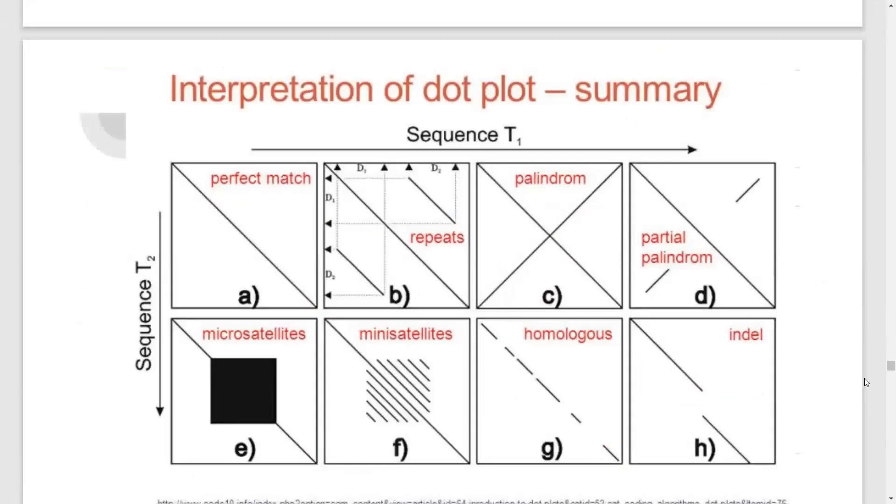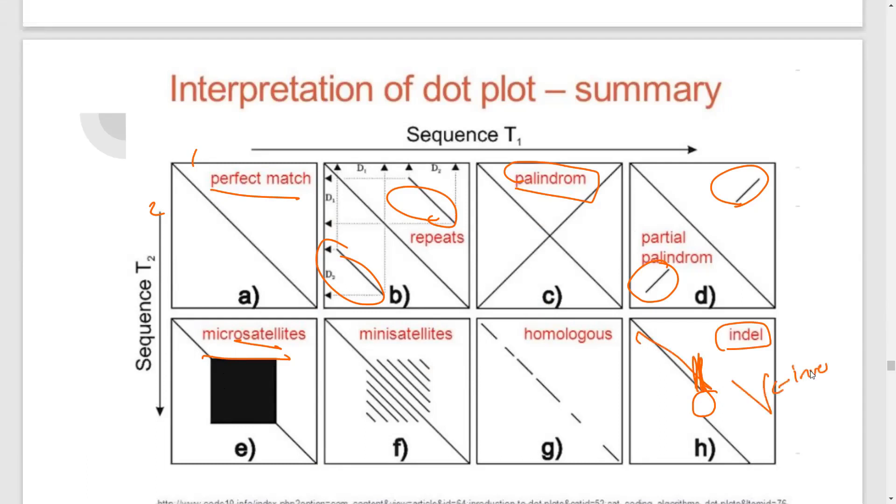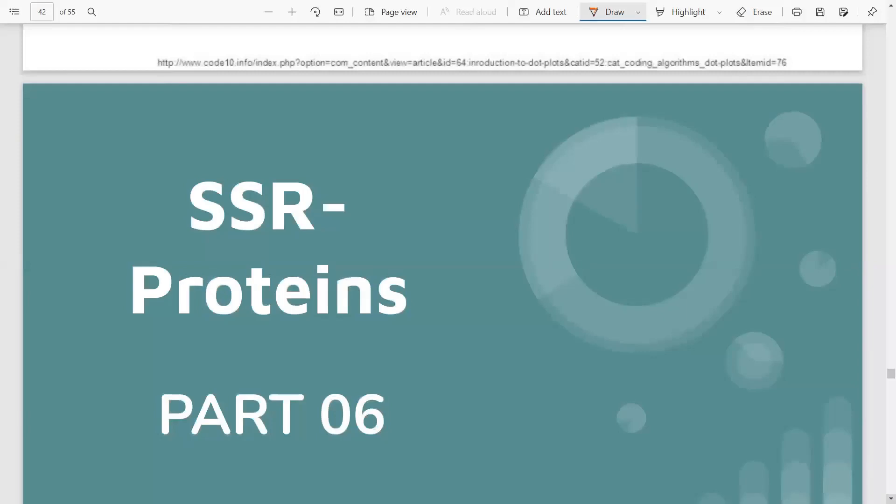This is a ready reckoner for you. Just by looking at this, you will be able to interpret what the dot matrix has. So if you have only one diagonal end-to-end, that's a perfect match, means sequence one and sequence two are perfect matches of each other. If you have parallel to the diagonal, repeat sequences. If you have something that forms like an X, it is a palindrome. If the entire diagonal you have and half chunks of these sequences, then it is a partial palindrome. If you have a kind of an empty space in middle, it's a microsatellite. And if you have like cuts, cuts, cuts, like an aberrant diagonal, then it's a homologous sequence. And then if you have a shift in the position of a diagonal, it is indel. Indel is insertion or deletion. If you have something like this, like a V type of figure, a diagonal and kind of a V like this, it is called an inverse. So these kinds of questions have also been asked in the DBT paper.